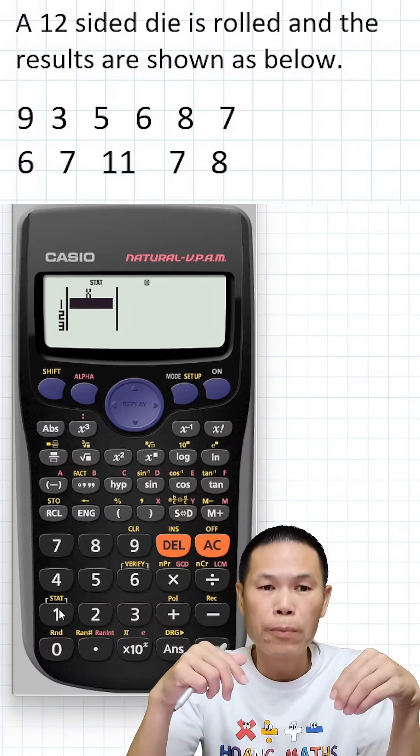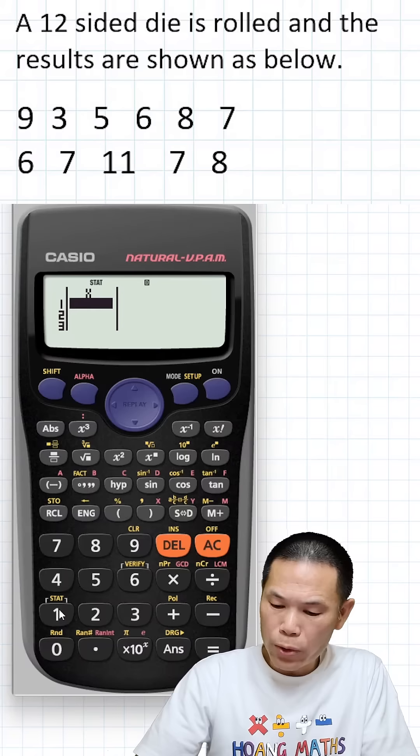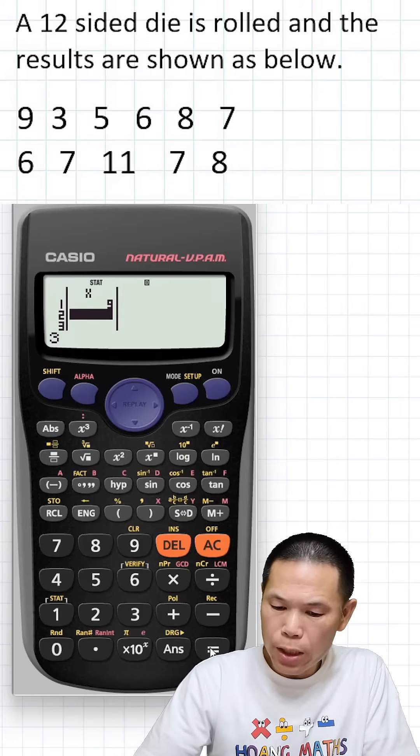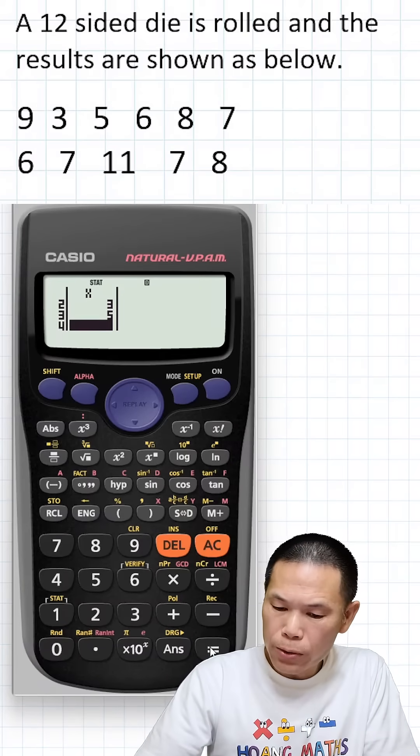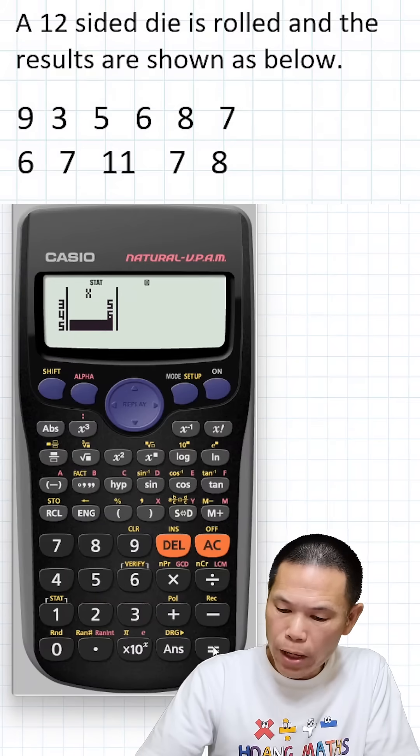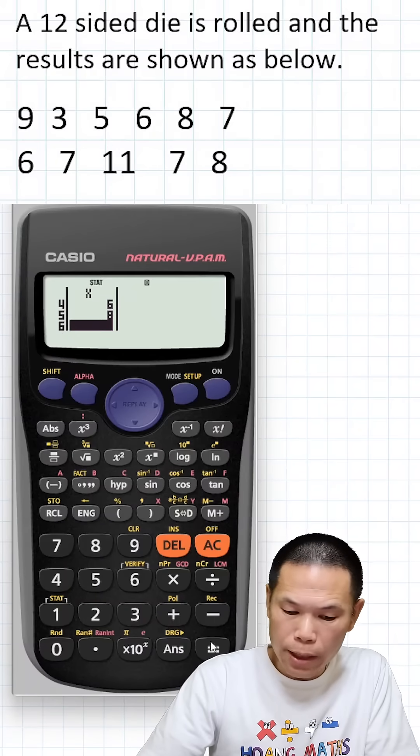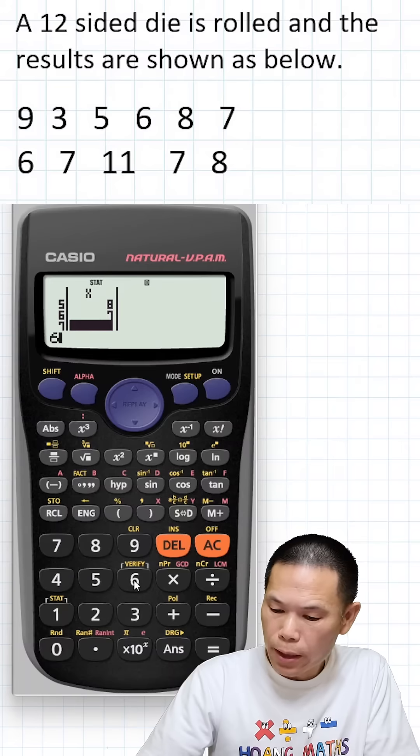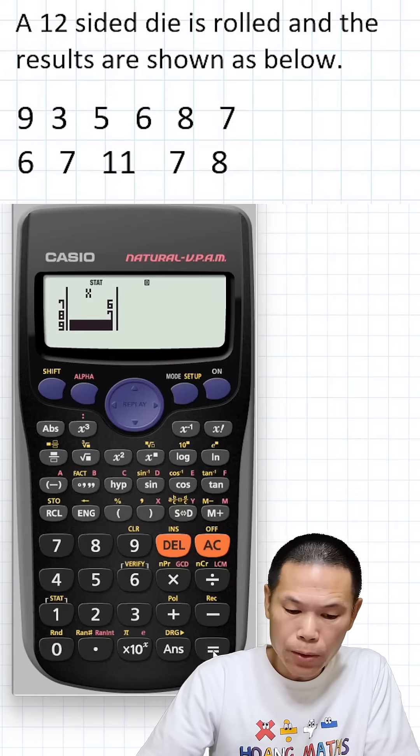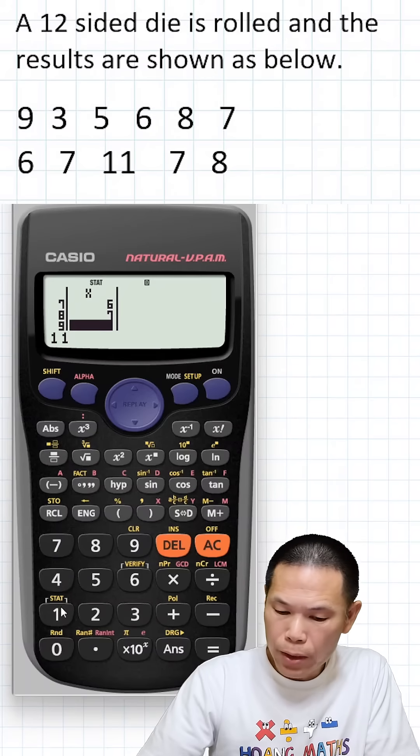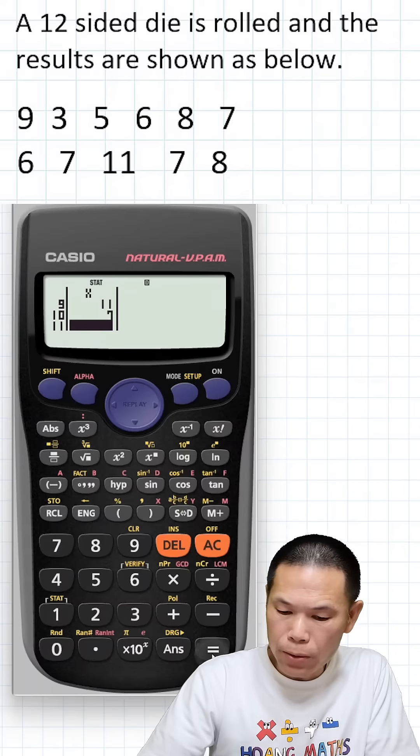Just put the values in. Let's go: nine equals, three equals, five equals, six equals, and then we have eight equals, seven equals, six equals, seven equals, and then we have eleven equals, seven equals, eight equals.